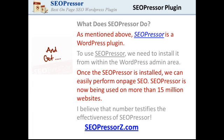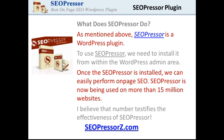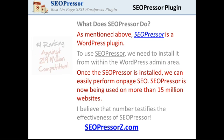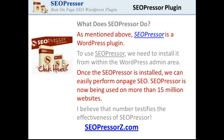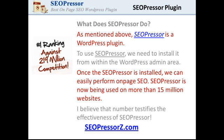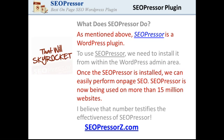So, what does SEO Prezzo do? As mentioned, SEO Prezzo is a WordPress plugin. To use this plugin, we need to install it from inside the WordPress admin area, so it can only be used on a WordPress blog. Once SEO Prezzo is installed, we can easily execute on-page SEO each time we make a post inside the WordPress blog.